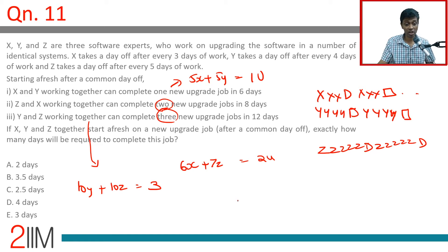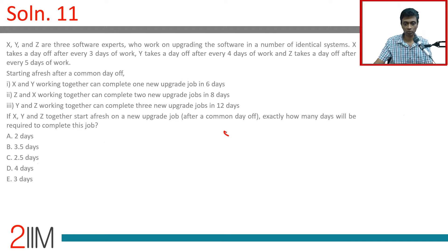If X, Y, and Z start together, start afresh on a new upgrade job after a common day off, exactly how many days will be required to complete this job? So five X plus five Y equals one.